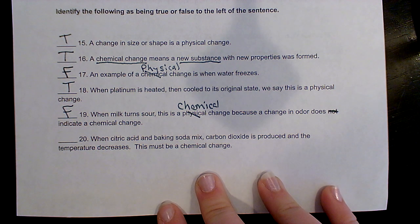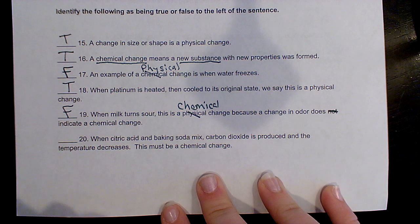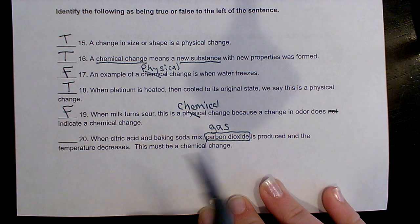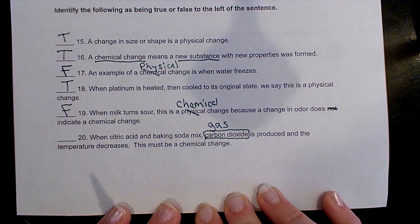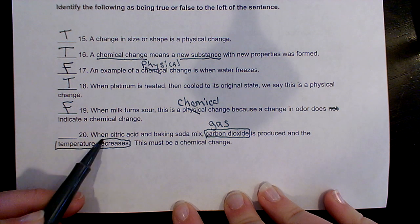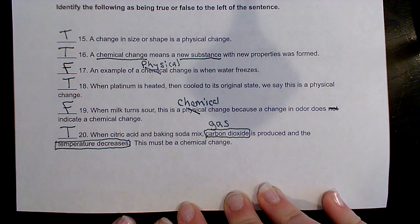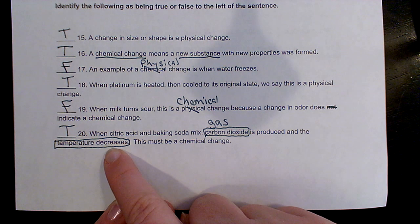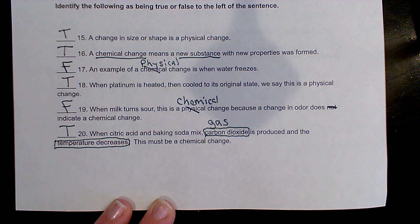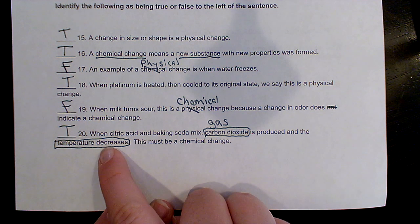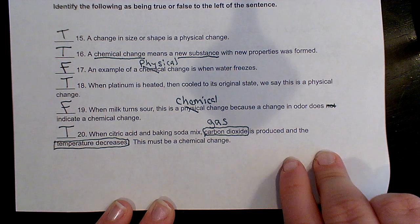When citric acid and baking soda mix, carbon dioxide is produced and the temperature decreases — this must be a chemical change. Carbon dioxide would be a gas, so this would make bubbles. The temperature changes — that was also a clue that a chemical reaction had taken place, so this has got to be true. Production of gas is a clue a chemical change has taken place, and a temperature change that happens just from these things mixing together is also one of our clues of a chemical change.